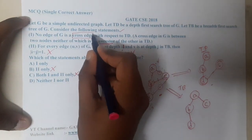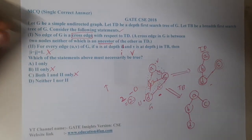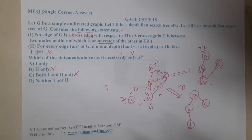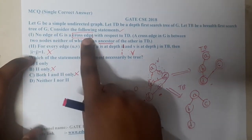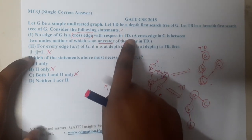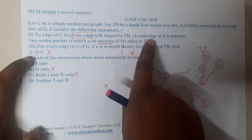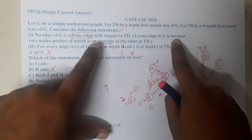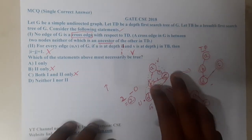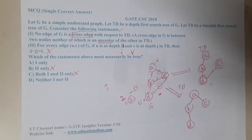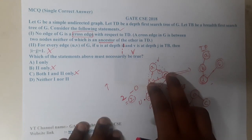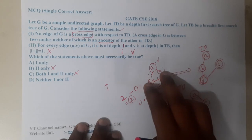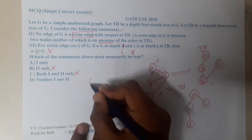I am a bit skeptical about the cross edges. A cross edge in G is between two nodes neither of which is an ancestor of the other in TD. You need to select those two nodes which are not ancestors of each other. In the current graph, for most edge pairs, one is an ancestor of the other.